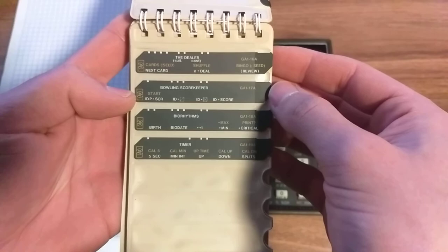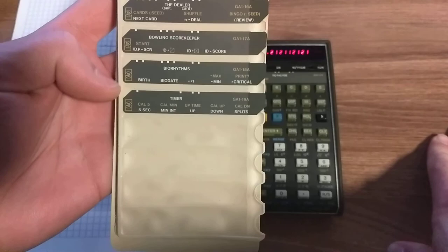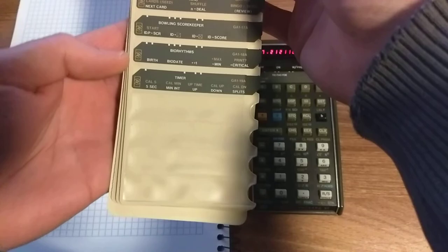Car dealer, you can keep scores for your bowling games, biorhythms which I have no clue what's about, and a timer. That's a lot of different options here.